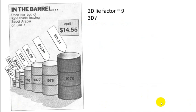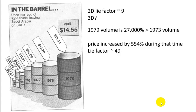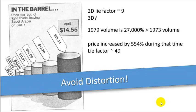Here's another example where each data point — the price of a barrel of oil in a given year — is represented by a picture of a barrel of oil. As a two-dimensional drawing the lie factor would be about nine. But the metaphor of a 3D barrel causes the viewer to think about volume capacity: the capacity of the 1979 barrel is 27,000 percent more than the 1973 barrel, even though the price only increased by 550 percent during that same time — a lie factor of almost 50. Take-home message: avoid distortion.